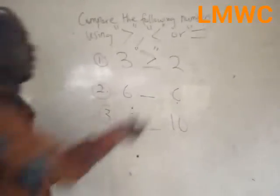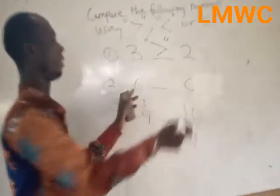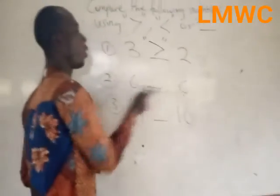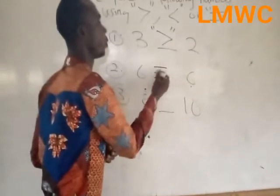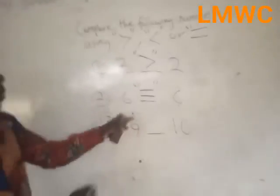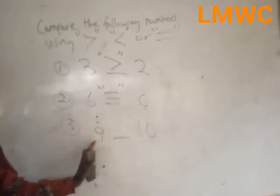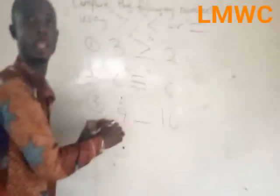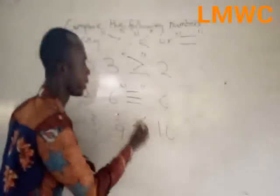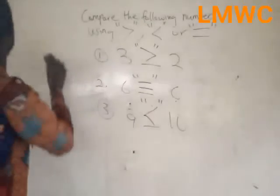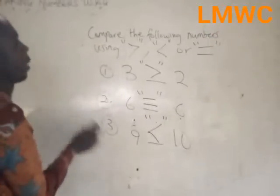The second question: this is the right-hand side and this is the left-hand side — they are equal in values, so we put in equal to. Now, we have nine at the left-hand side and ten at the right-hand side. This means nine is lesser than ten, so we put in our less than.